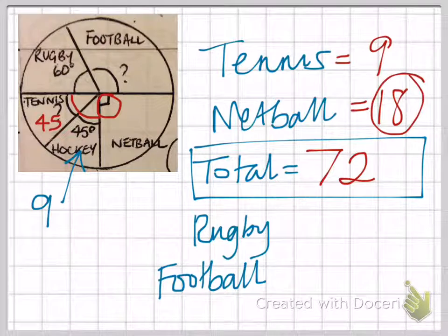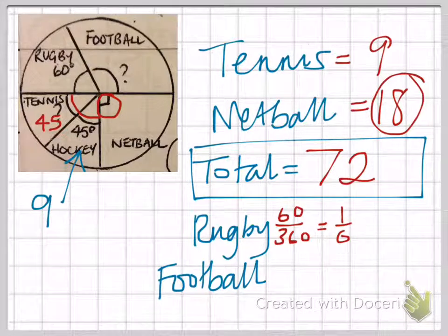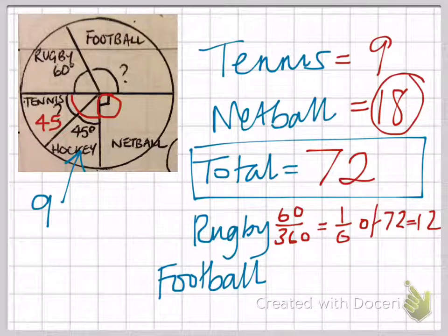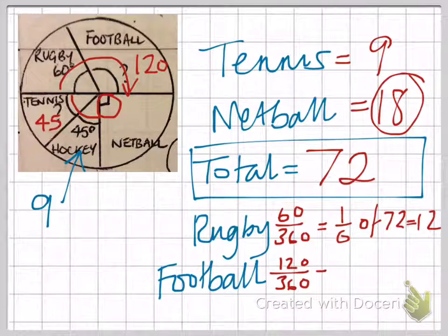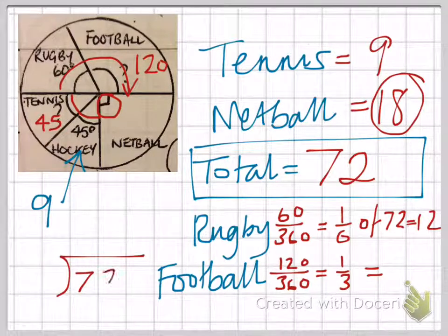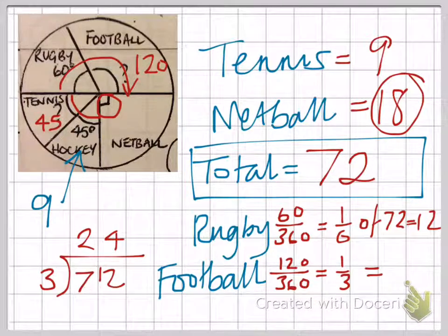Let's look at the rugby. 60 out of 360 degrees is the same as one sixth, so a sixth of the children like rugby. A sixth of 72 would be 12. For football, remember this is 180 degrees, so take away the 60 to give us 120. 120 out of 360 degrees are the children who like football. That simplifies to one third, and one third of 72 — divide by 3 using a bus stop: threes into 7 go 2 remainder 1, threes into 12 go 4 — so that gives us 24.